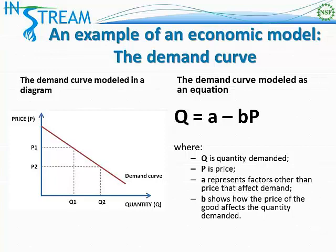This is a diagrammatic representation of the demand curve, but economists also use equations to represent it. Here on the right side of this slide we have an equation where q is the quantity demanded of a good or service and p is the price of the good. As you can see, if the price of this good goes up — because it has this minus term in front of it — the quantity demanded will go down. So the equation explains the exact same relationship as the curve, but only in the form of an equation.